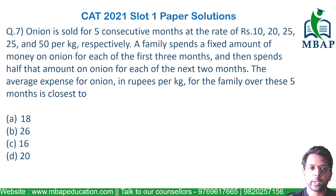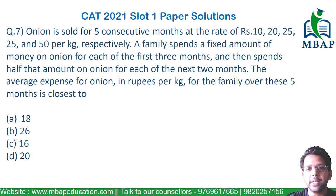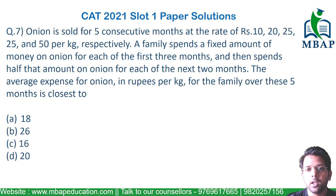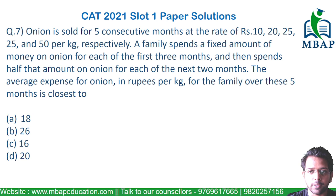The question says onion is sold for five consecutive months at the rate of rupees 10, 20, 25, 25, and 50 respectively. A family spends a fixed amount of money on onion for each of the first three months and then spends half of that amount for the next two consecutive months. We need to find the average expense for onion in rupees per kg for the family over the five months.